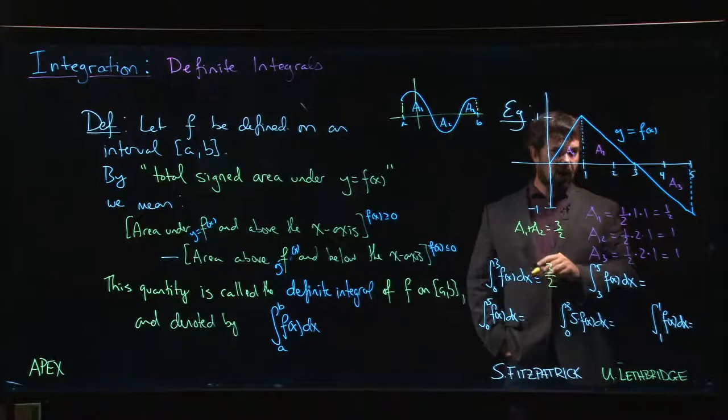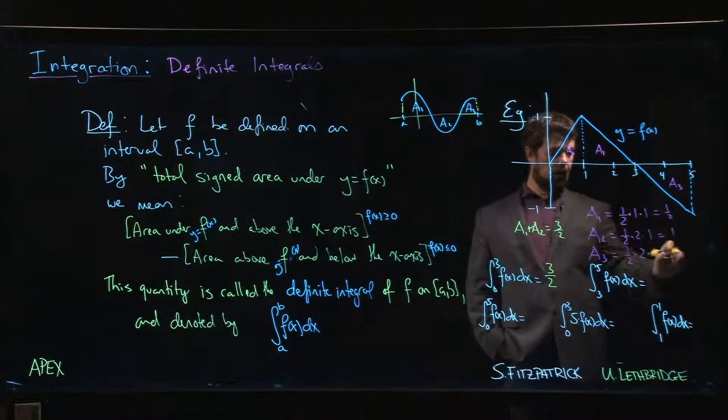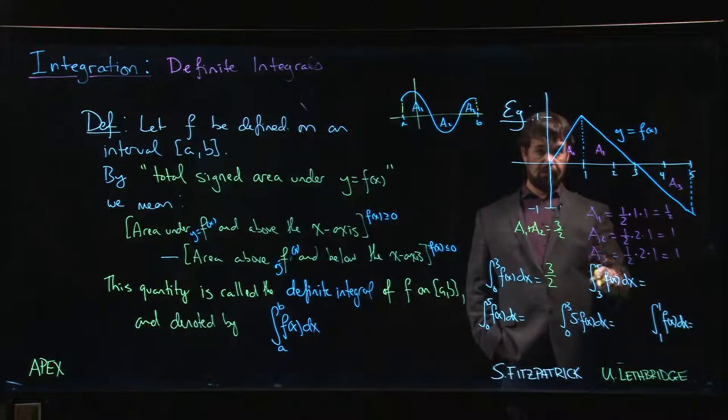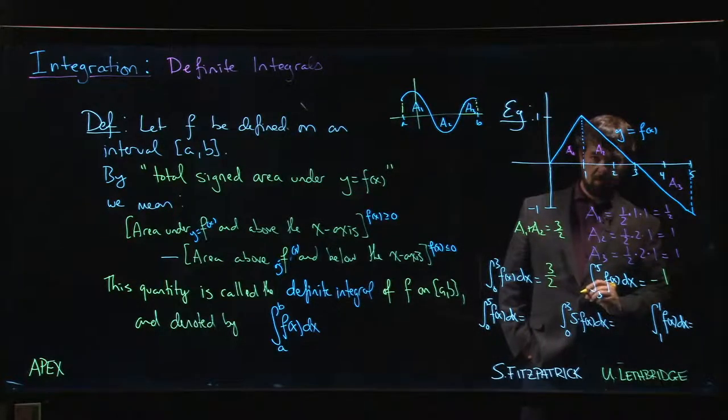The integral from 3 to 5, well, this area here is 1. But we want signed area for the integral. So because this is below the x-axis, that comes out to minus 1.